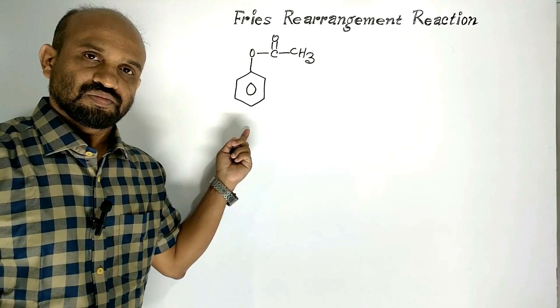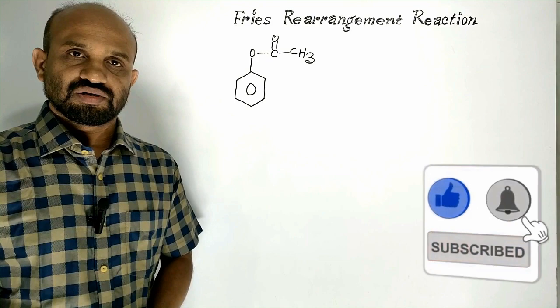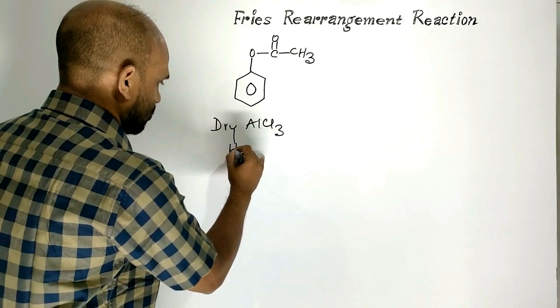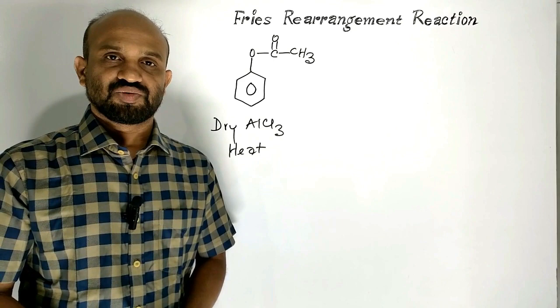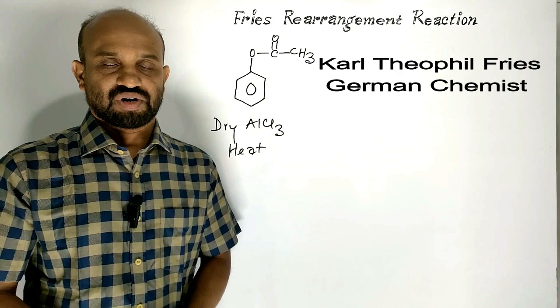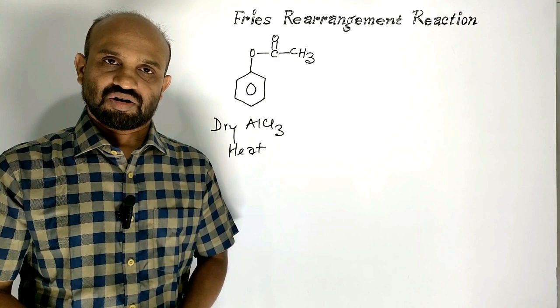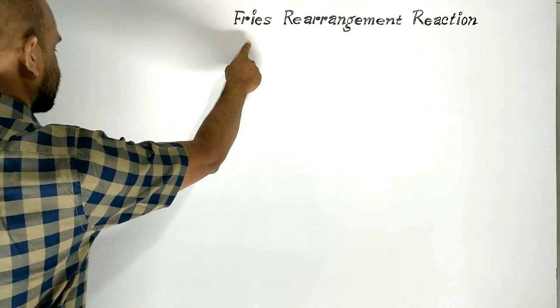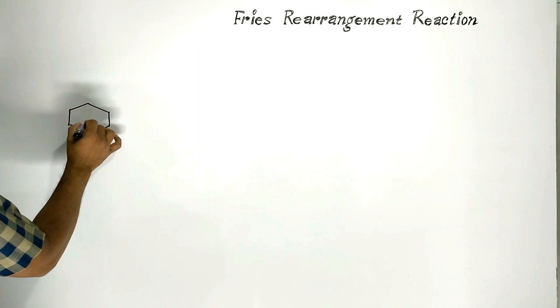Now this is phenyl acetate. Phenyl acetate undergoes rearrangement reaction in presence of dry aluminium chloride on heating, which is known as Fries rearrangement reaction. This is named after German chemist Karl Theophil Fries. In this lesson we are going to learn Fries rearrangement reaction of phenyl acetate.